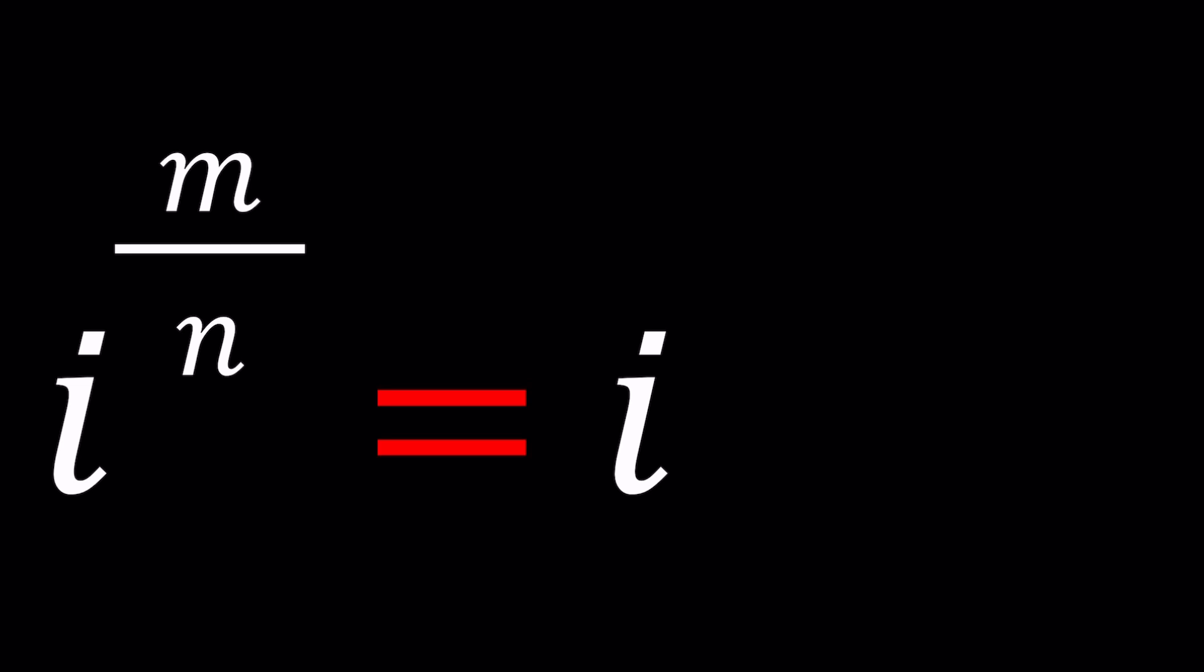For which powers of i do you get i? You probably know that i to the first power is i. Any number to the first power, no exception, including zero, any number to the power one is the number itself.